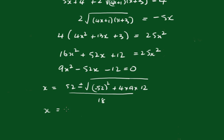So this comes out to x equals 52 plus or minus 56 over 18, giving x equals 6 or x equals minus 2 ninths.